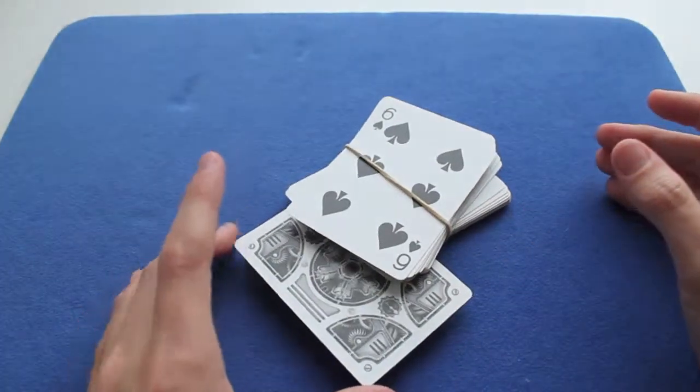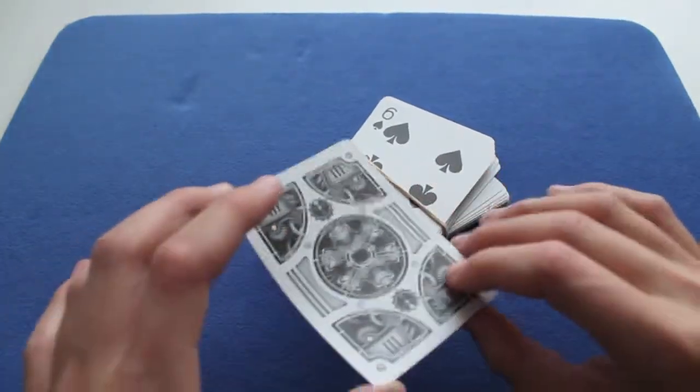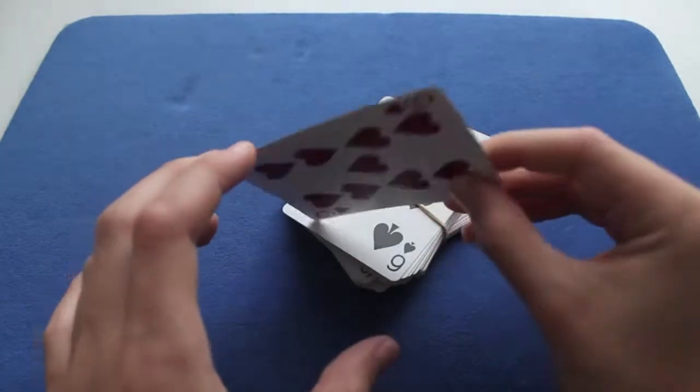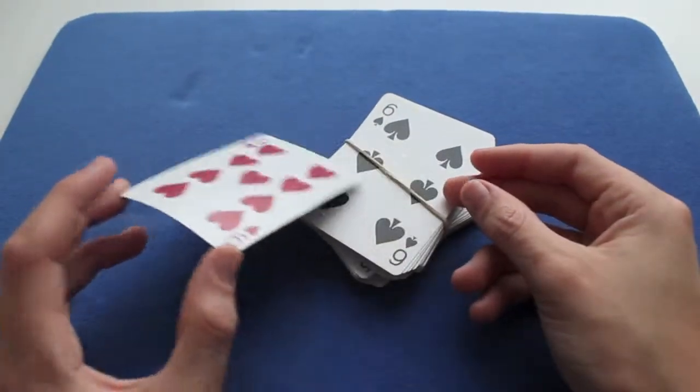And so, you see, and now one card has flipped over. Only one. And it came out of the rubber band. And you show the card, the nine of hearts.